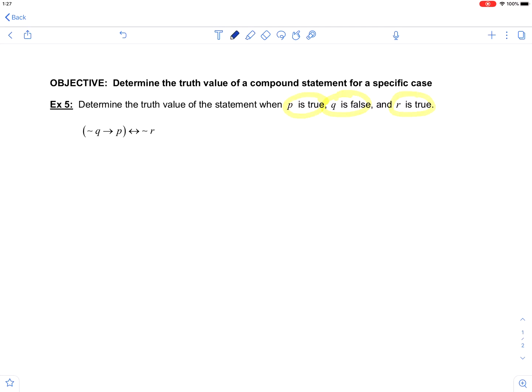So if we have our statement, if not Q, then P, if and only if, not R, and we're saying that P is true,